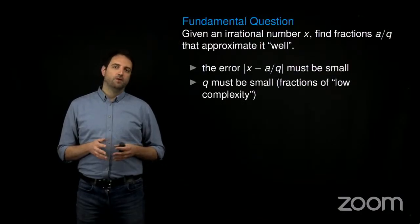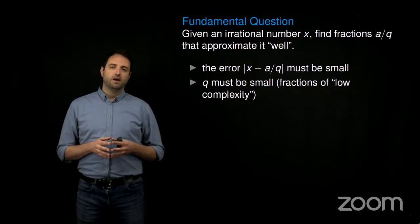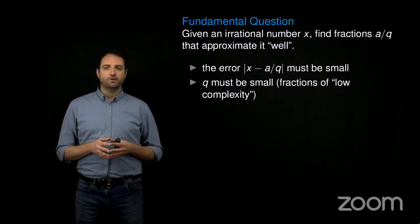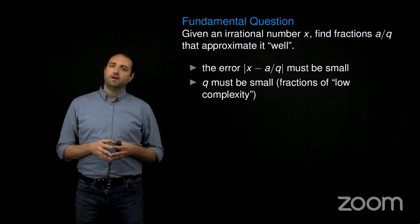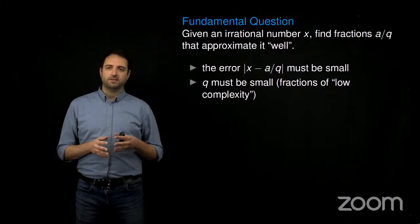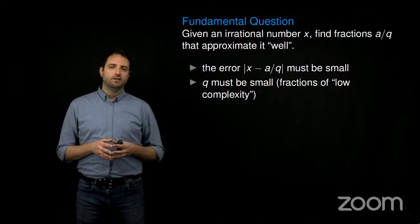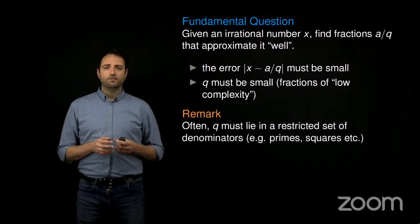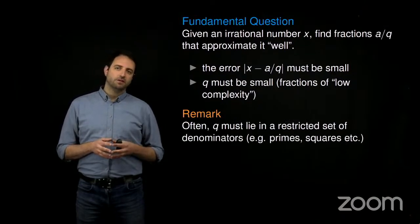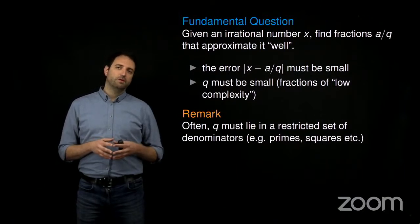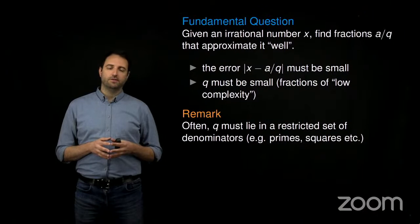Here is the question we shall study. We are given some irrational number X, and we want to find fractions A over Q that approximate it well. The error should be as small as possible, while at the same time having our fraction A over Q being as simple as possible. The typical way to measure the complexity of the fraction is by measuring how large its denominator Q is. Moreover, we often require Q to lie in some special set of denominators — for example, prime numbers or squares — and this aspect will be particularly important for this talk.